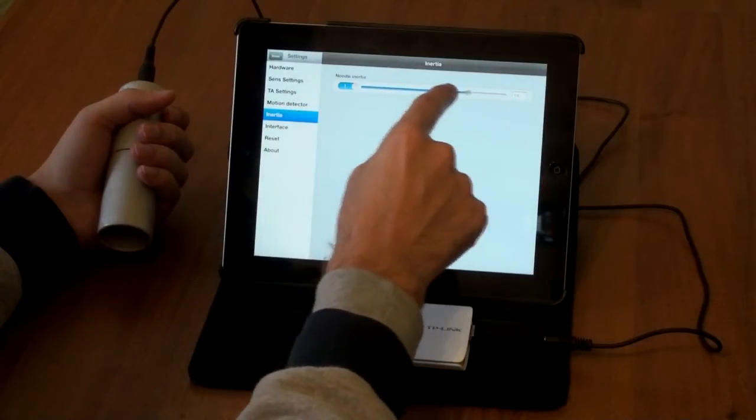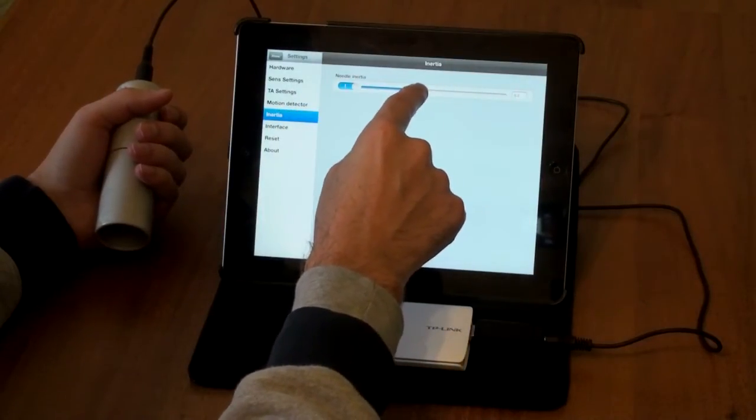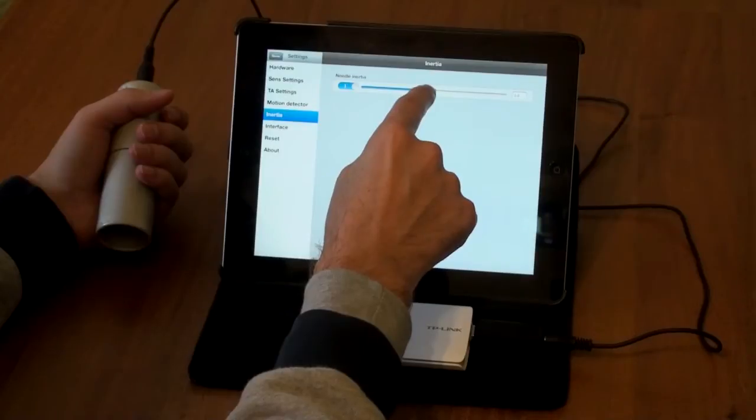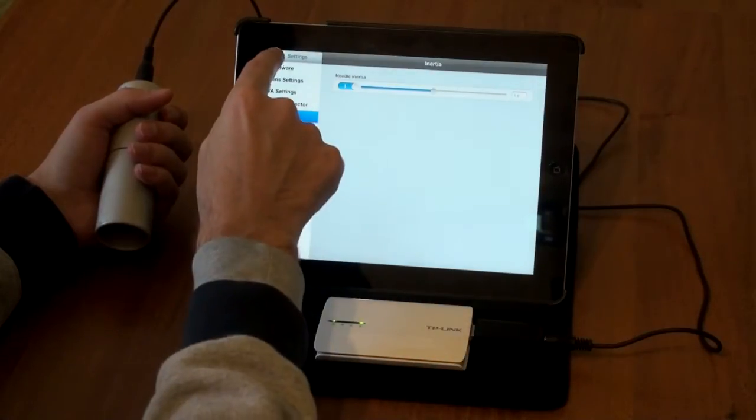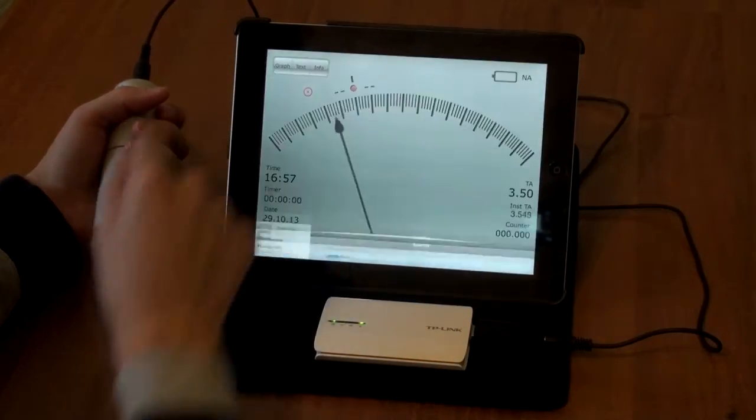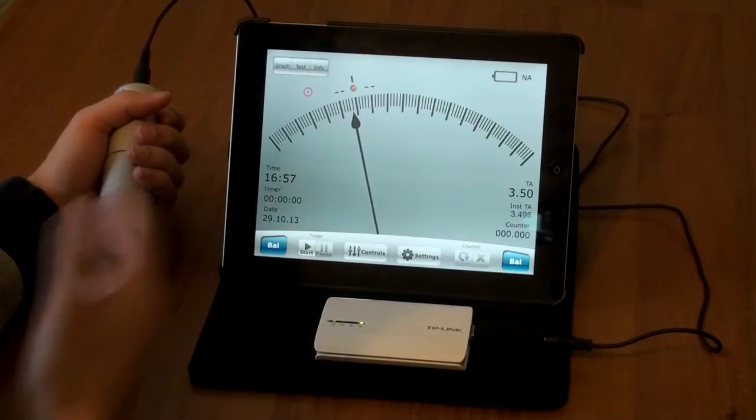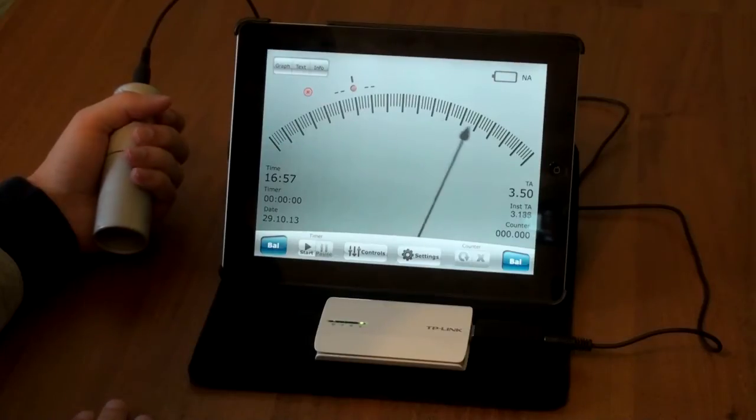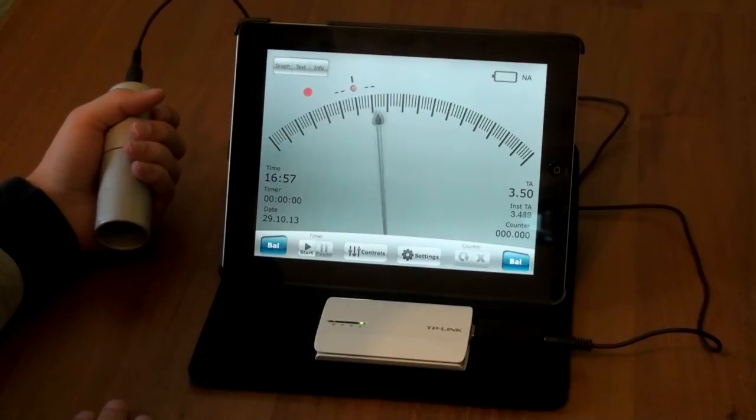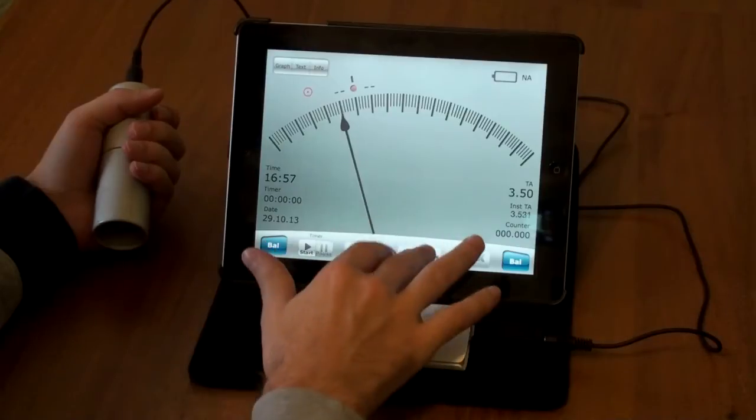And now I will make optimum sensitivity, optimum needle inertia. This optimum setting prevents indicating of heart beats at the needle. It's working good.